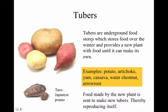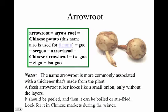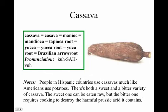Here are some examples of tubers — they're underground food storage. Potatoes and yams are examples. What can happen is we can slice a tuber in half, plant it somewhere else, and it will grow a whole new plant. Arrowroot is another example — it's a thickened underground stem that will create a whole new plant.